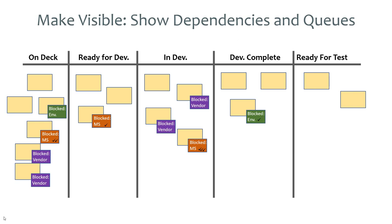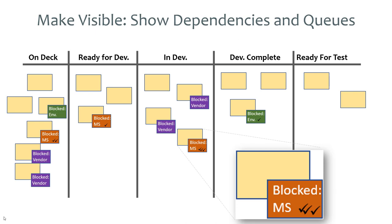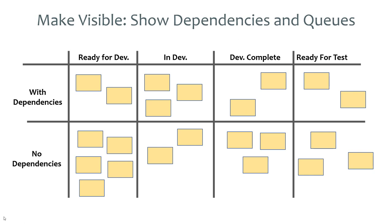Here we're seeing a Kanban board where we start marking our blocked issues or where we have dependencies. At stand-up every day, team members say they would like to work on something but it's blocked by a certain group, and they put a tick every day that they discuss it. So we're getting information not only about blocked items but also the duration of blocked items — that's what the little tick is showing. Another approach would be to separately call out which work items have dependencies, showing a swim lane on the Kanban board for items with dependencies versus those without.